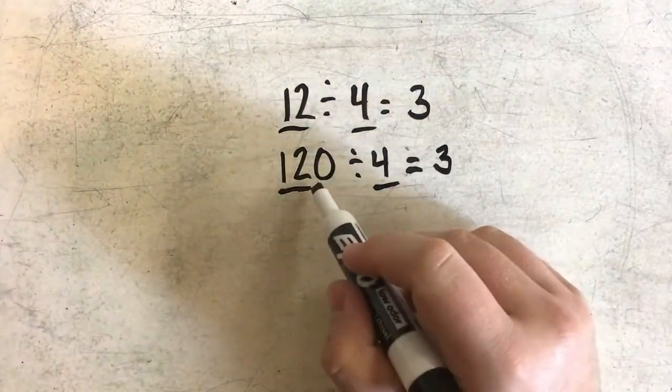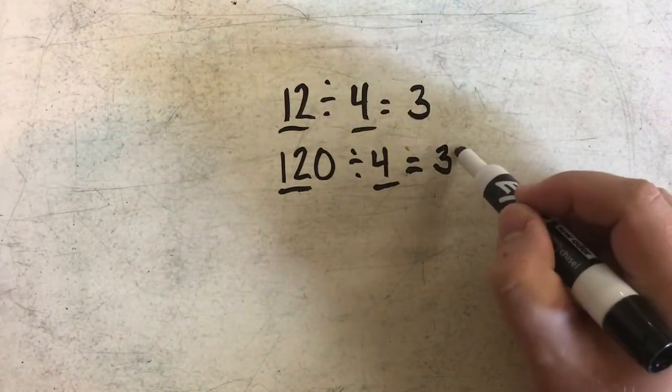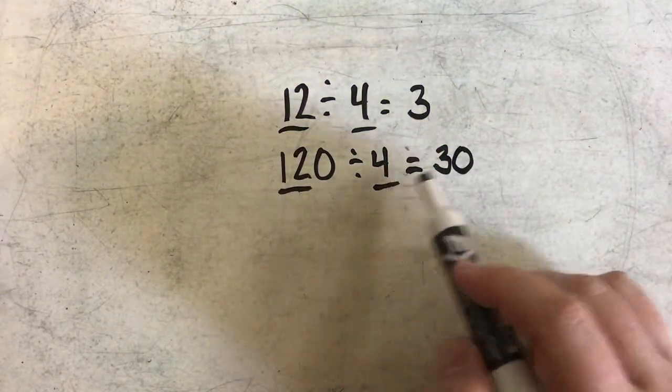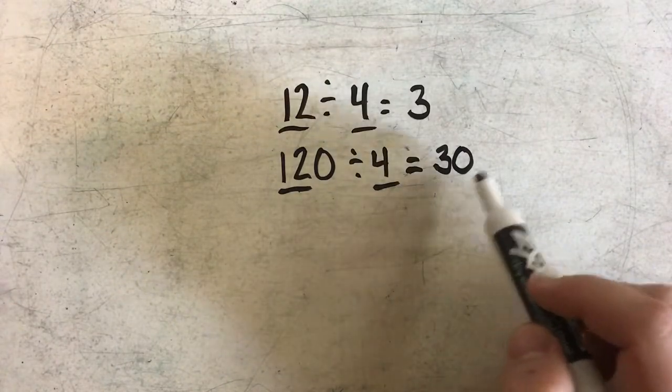However, since I have a zero on the end of my dividend, I need to include a zero in my quotient. So 12 divided by 4 is 3, but 120 divided by 4 is 30.